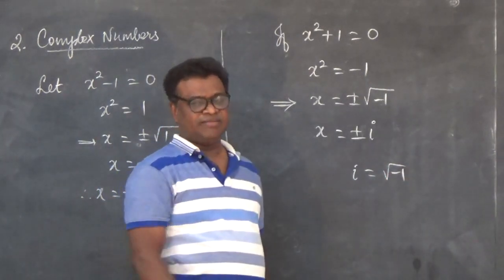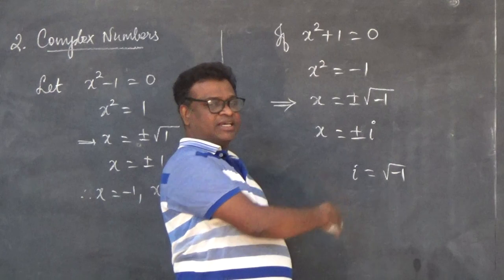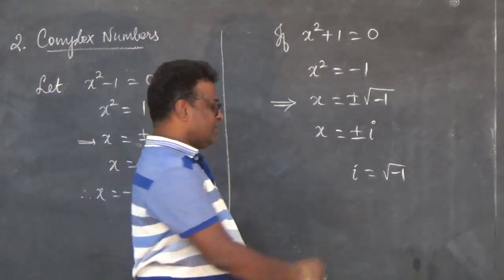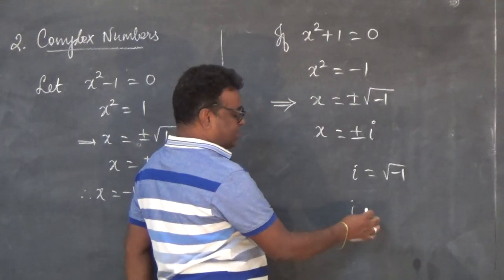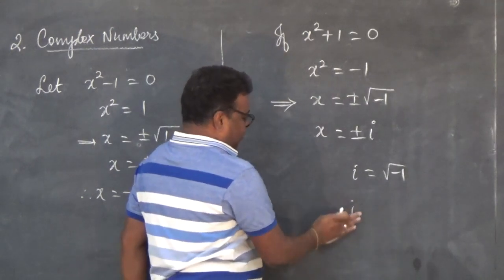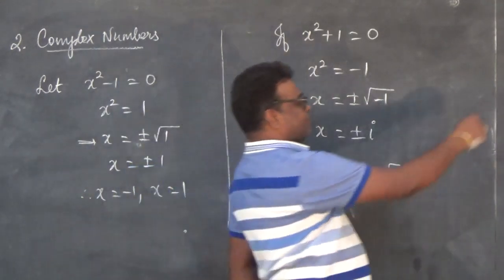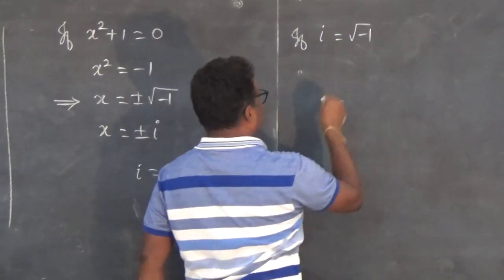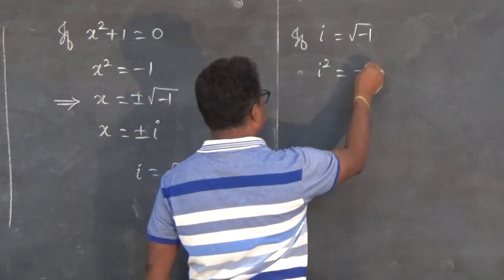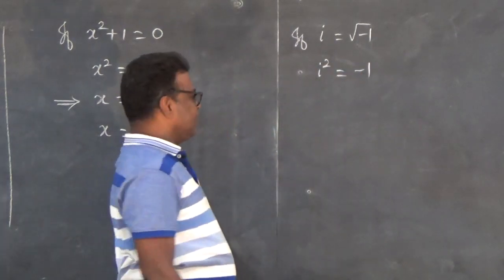This i value came as an imagination, and hence i is called an imaginary number. Now, they started studying this imaginary number by developing it. Suppose if i = √(-1), then i² = -1.